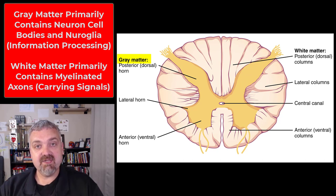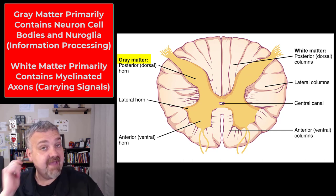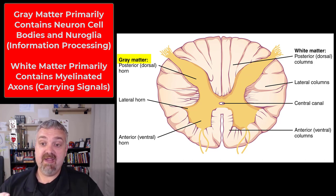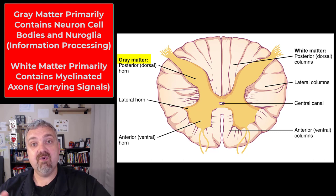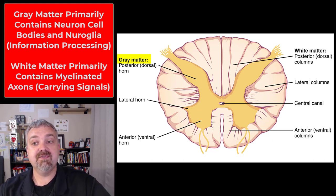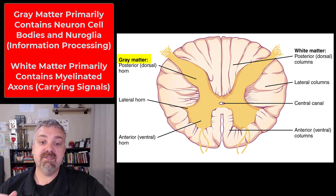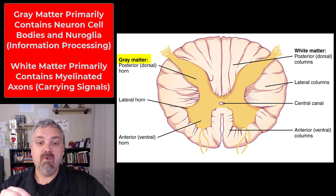Gray matter is going to be where the cell bodies are plus the neuroglia, the support cells. When I think of gray matter, I think of information processing. The posterior or dorsal half of the spinal cord is sensory — the posterior horns are going to be sensory. And then the ventral or anterior half of the spinal cord is going to be motor, so that ventral horn is going to be motor.